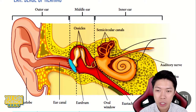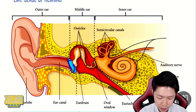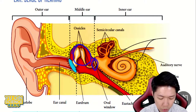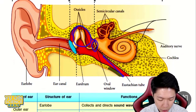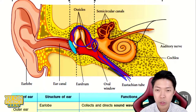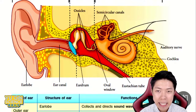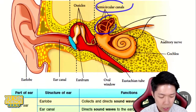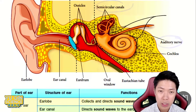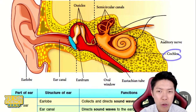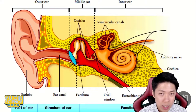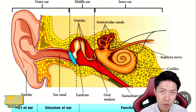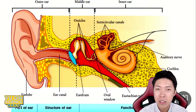The middle part of the ear consists of four parts: eardrum, ossicles, oval window, and eustachian tube. Inner ear consists of three parts — we have semicircular canal, auditory nerve which connects to the brain, and cochlea. So it's actually not very difficult: two parts, four parts, three parts.